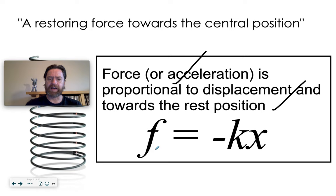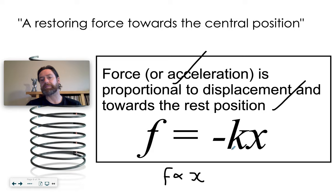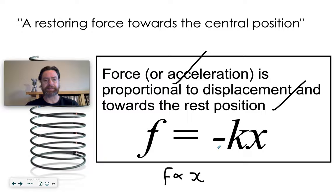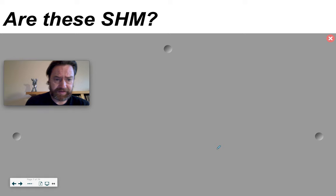We normally sum that up with the expression F = -kx. What we're really saying is that F is proportional to displacement x, with some constant k introduced. The important part is the minus sign — it indicates that the force is directed back towards the rest position. You need to learn that as well.